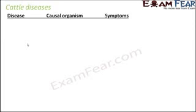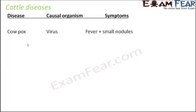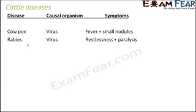Let's look at some of the important cattle diseases, their causal organisms, and symptoms. We'll start with cowpox, which is caused by a virus. The symptoms include fever and small nodules on the body of the organism.